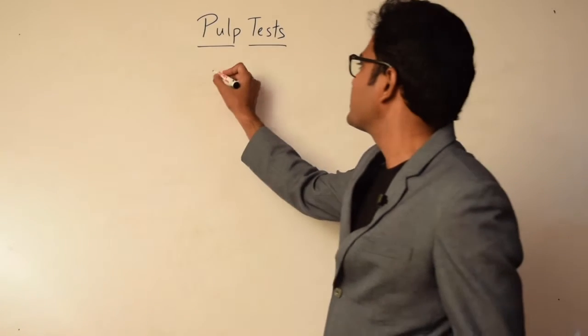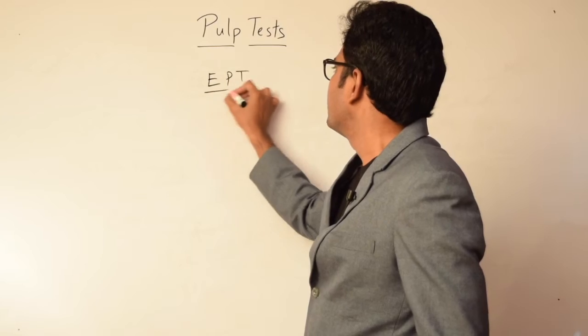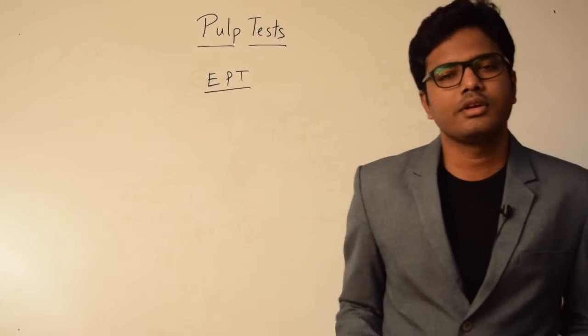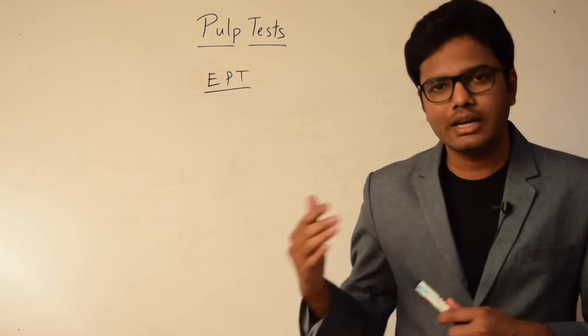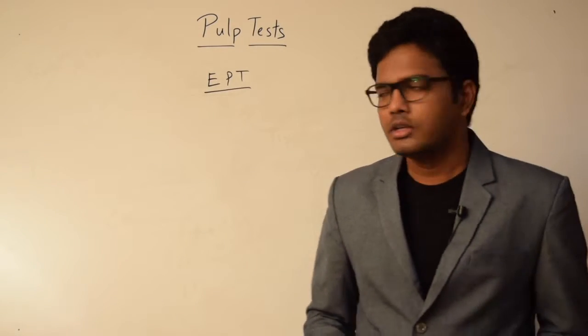Hi, in this class I would like to discuss electrical pulp testing. Electrical pulp testing, also called EPT, is usually done to analyze the vitality of a tooth. Unlike heat tests, cold tests as well as electrical pulp testing help us to evaluate the vitality of a tooth.